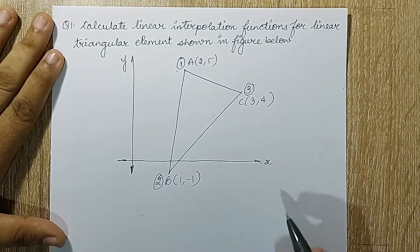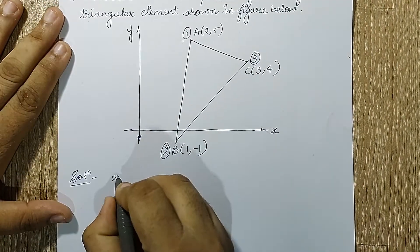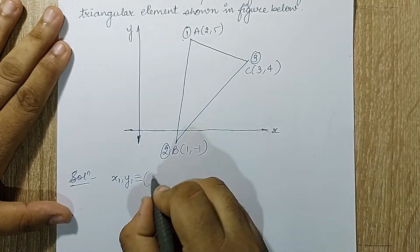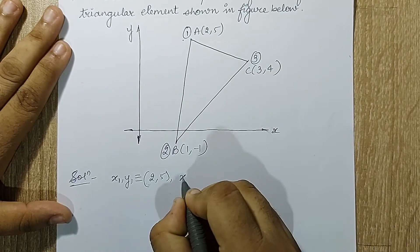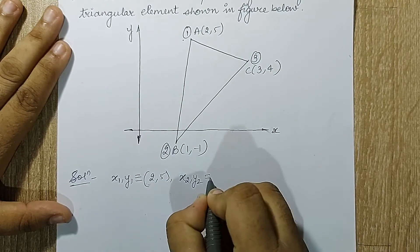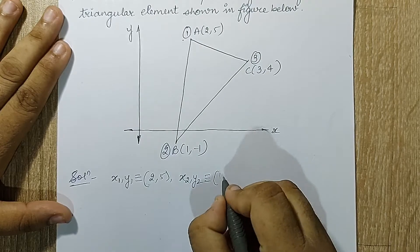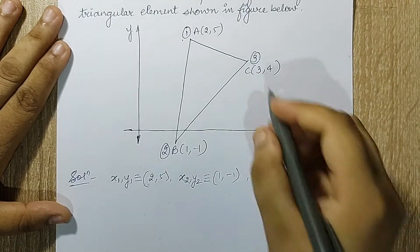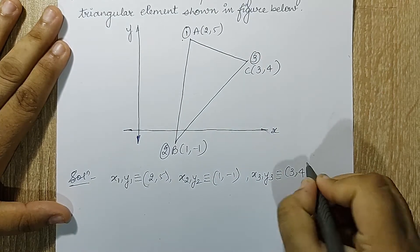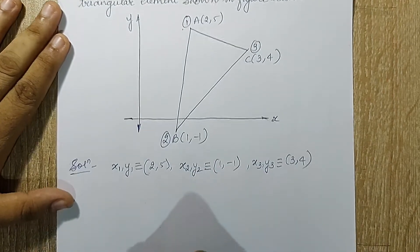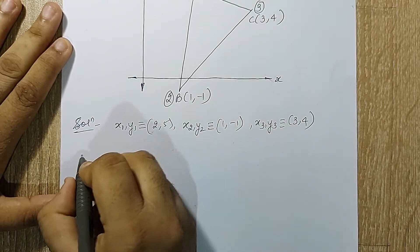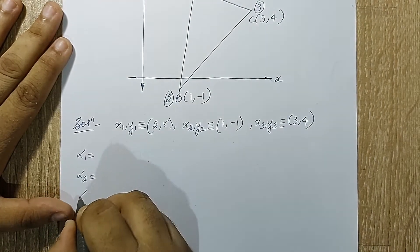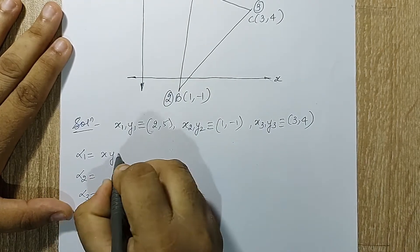Now let's start solving. I'll write down x1, y1 — starting with this point, it is 2 comma 5. x2, y2 is 1 comma minus 1, and x3, y3 is 3 comma 4. These points are given to me. Next I am going to calculate my value of alpha.